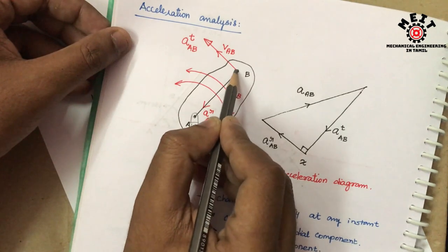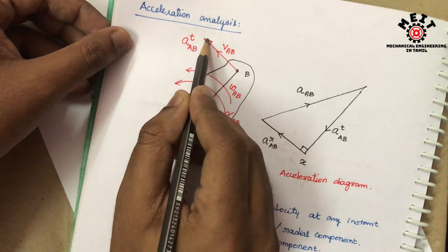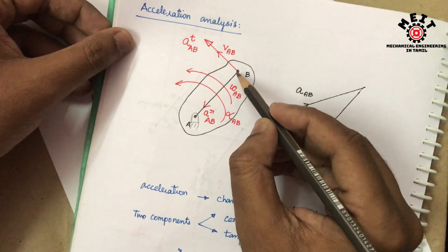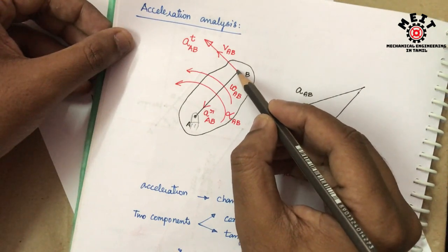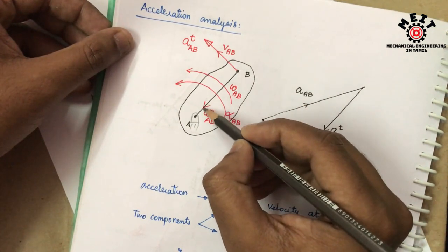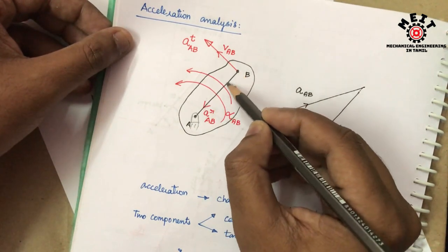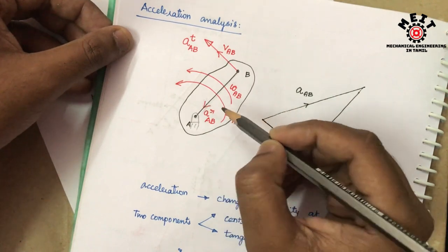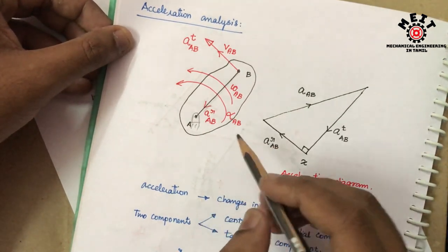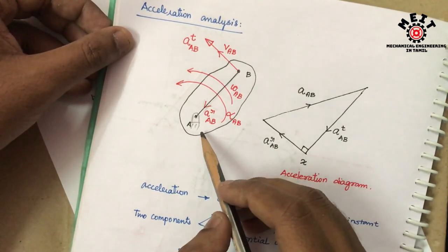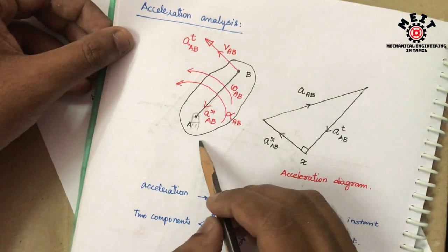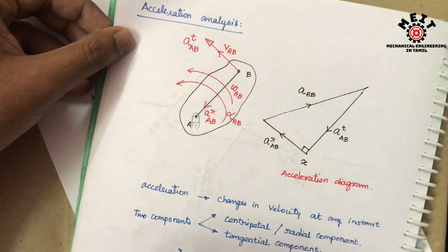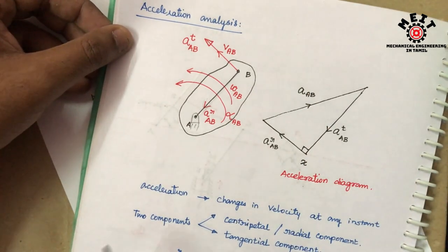One acceleration component will make the object rotate, and the link is in the perpendicular direction — that is the tangential component. If you have acceleration and the link is in the radial direction, that will be the radial component. So there are two different components, and based on that we have to draw the acceleration.